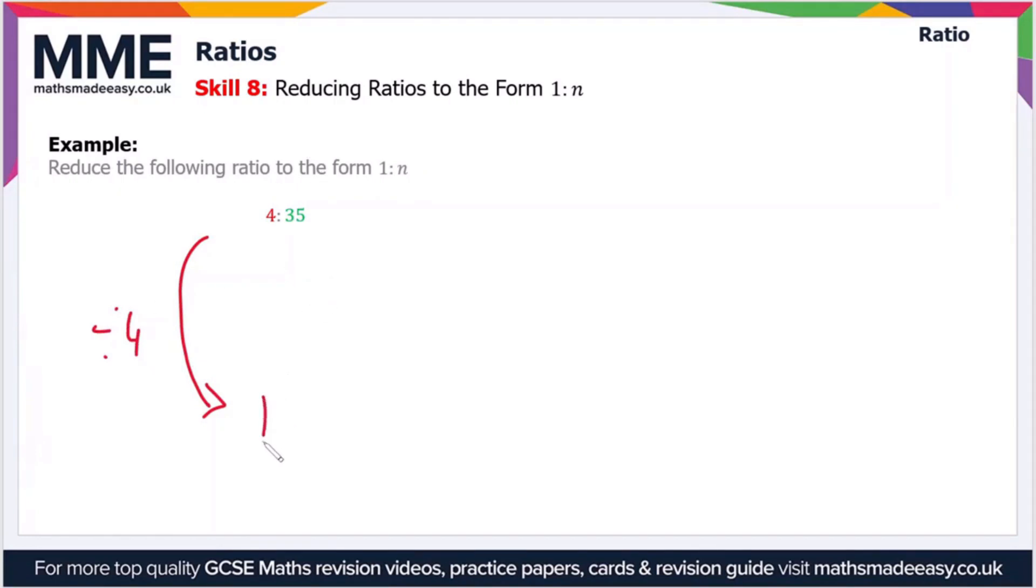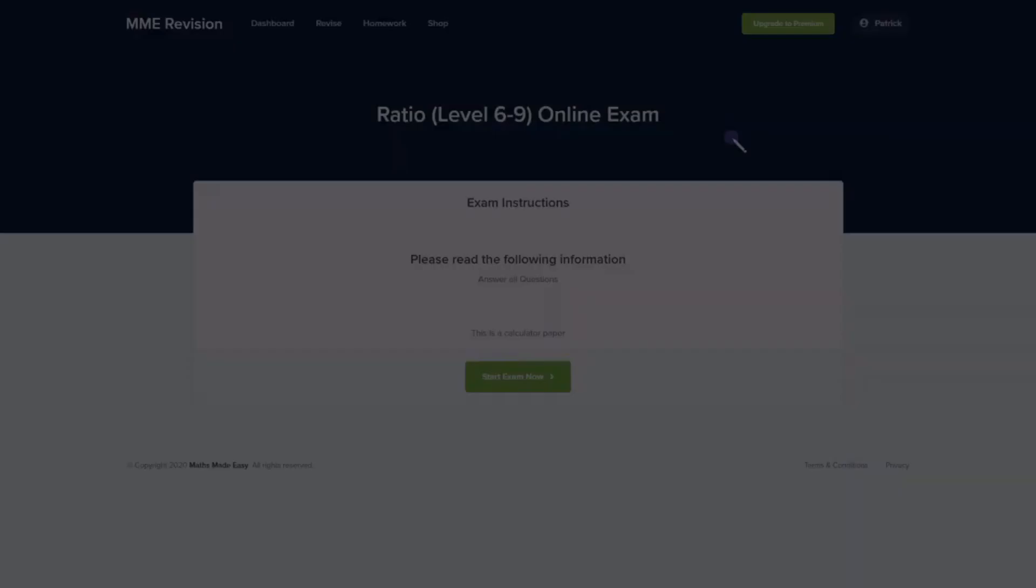Then we get the ratio 1 to 35 over 4, which is equivalent to 1 to 8 and 3 quarters, or if you prefer, 1 to 8.75. So that's all you have to do really.